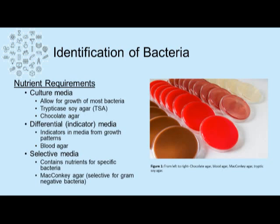The nutritional requirements for bacteria can vary depending on species, and culture media can be implemented to grow most types of bacteria. Examples of culture media include trypticase soy agar or chocolate agar. A differential or indicator media can be used, which indicates specific growth patterns in bacteria, such as beta-hemolytic group A strep, which hemolyzes blood and creates a ring around its colonies developing on blood agar.